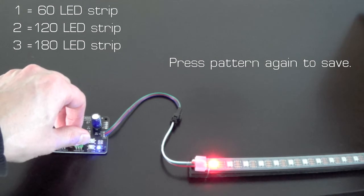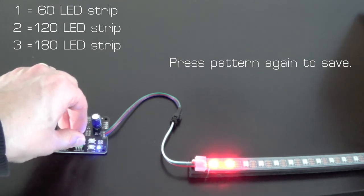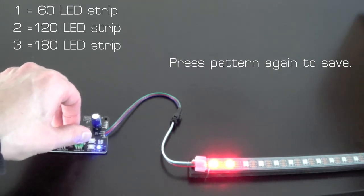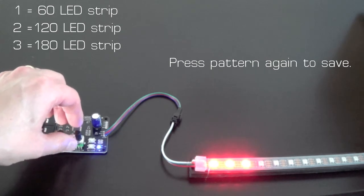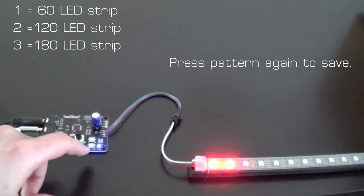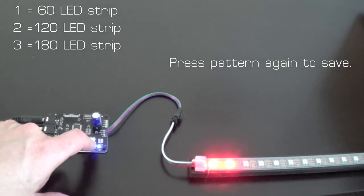One LED means that you have 60 LEDs in your strip, two for 120 LEDs, and three for 180. So set it to the number of LEDs that you have in your strip, and then just press the pattern button one more time.